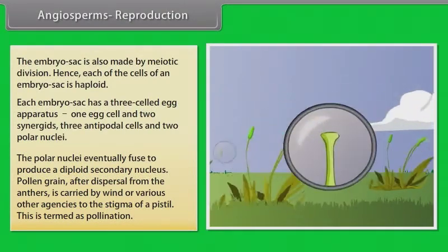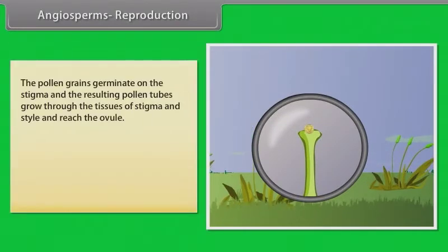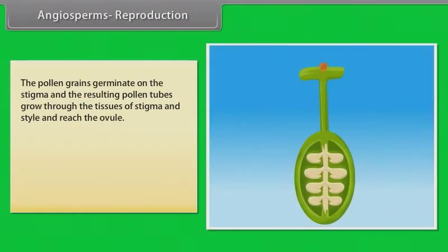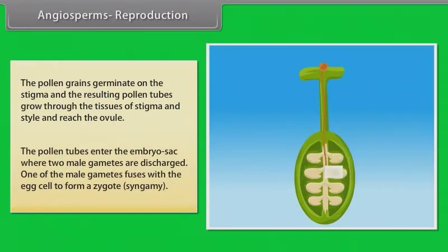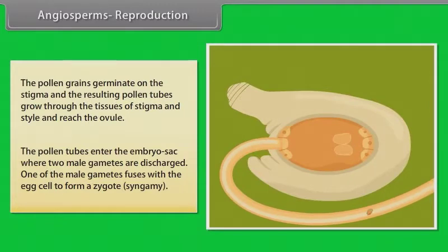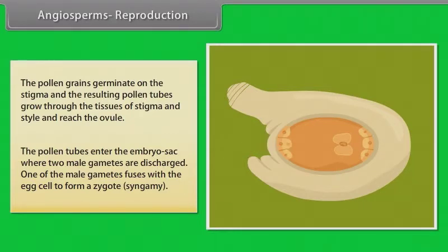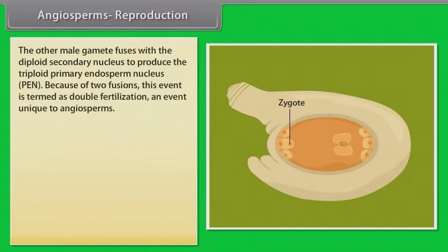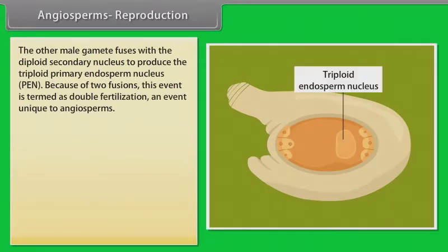The pollen grains germinate on the stigma and the resulting pollen tubes grow through the tissues of stigma and style and reach the ovule. The pollen tubes enter the embryo sac where two male gametes are discharged. One of the male gametes fuses with the egg cell to form a zygote (syngamy). The other male gamete fuses with the diploid secondary nucleus to produce the triploid primary endosperm nucleus (PEN). Because of these two fusions, this event is termed double fertilization, an event unique to angiosperms.